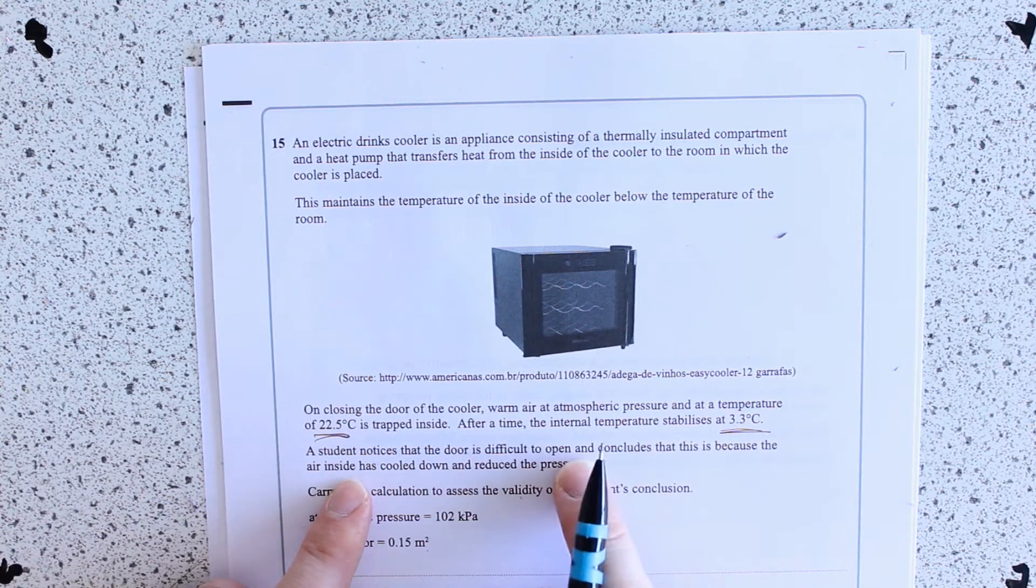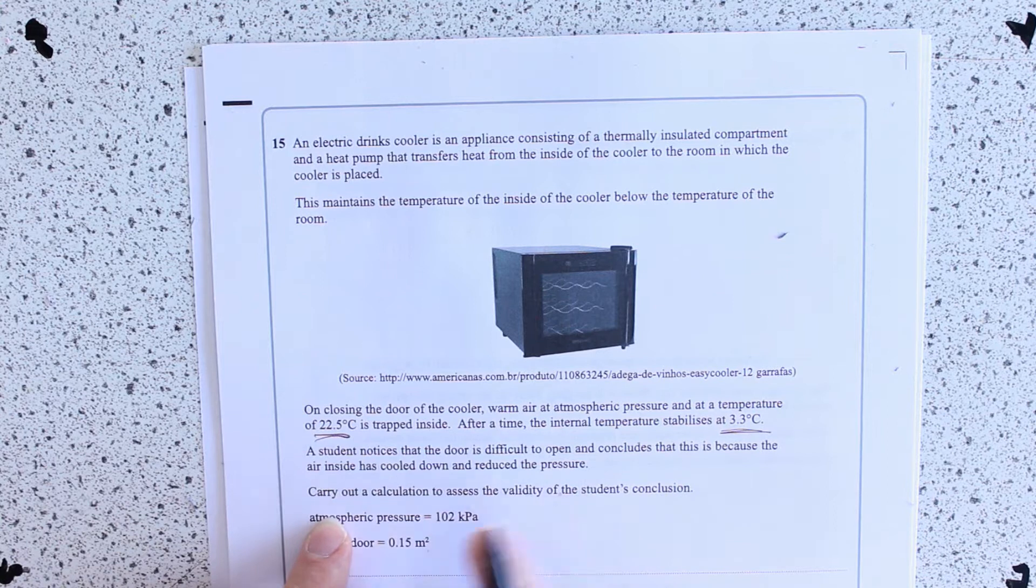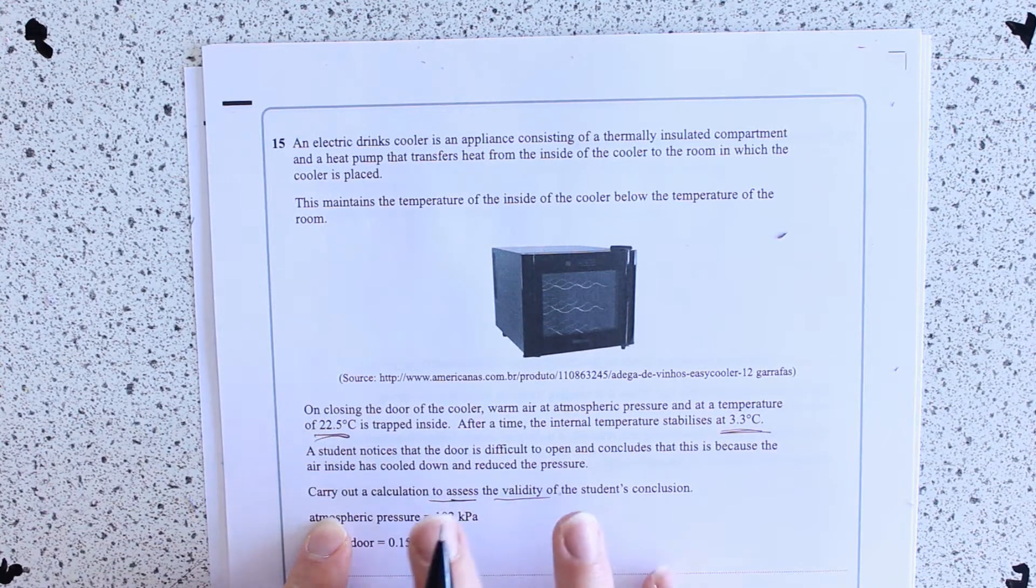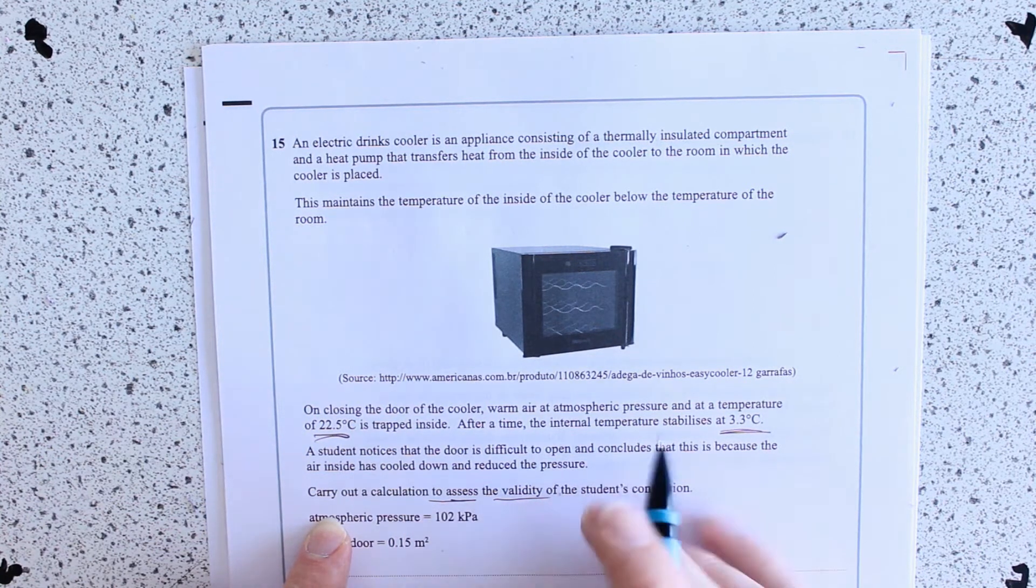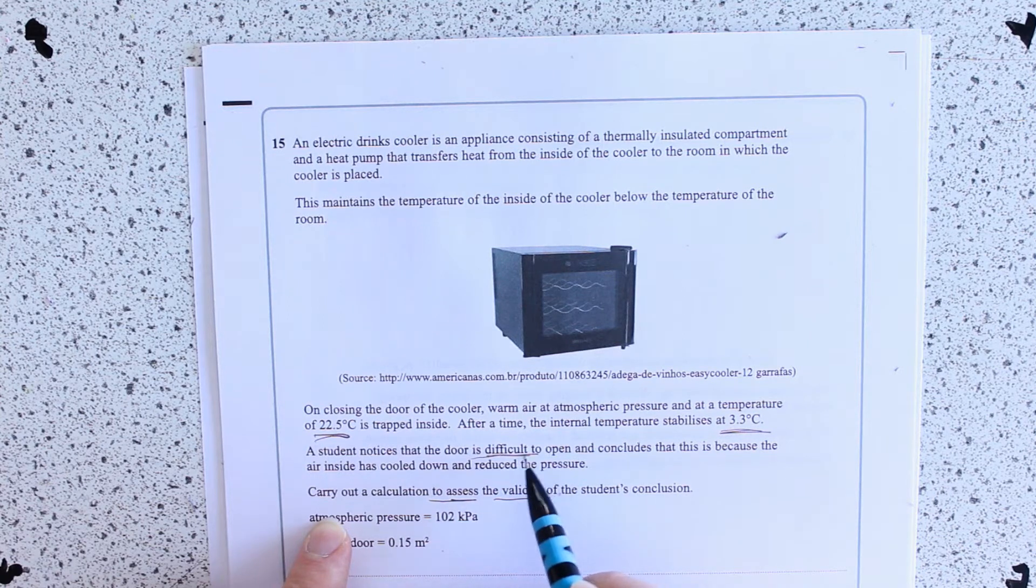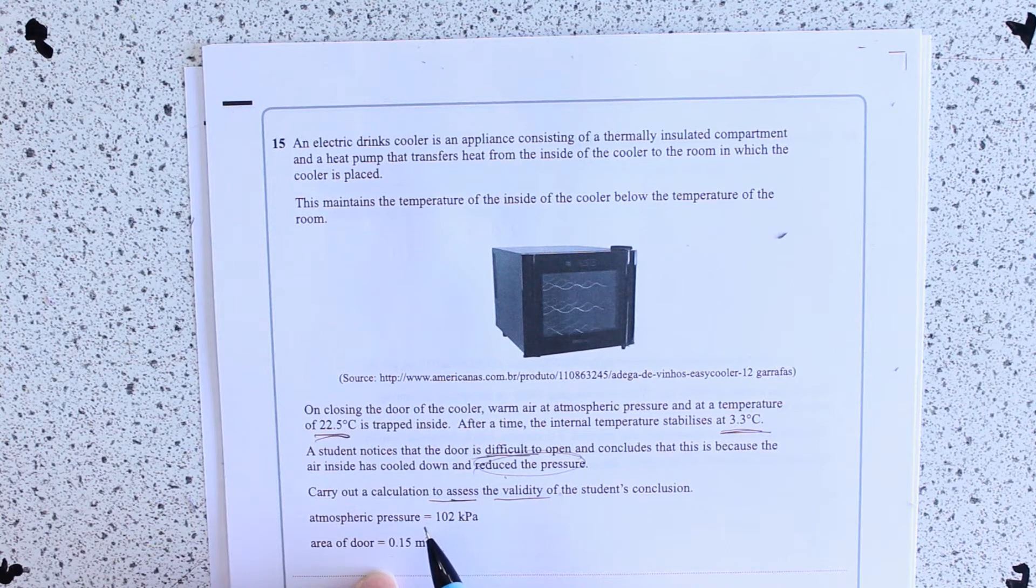A student notices the door is difficult to open and concludes this is because the air inside has cooled down and reduced the pressure. Carry out a calculation to assess the validity of the student's conclusion. This means you're going to have to make a comment at the end, so you're doing a calculation, basically to think, why is it difficult to open, and is this because of the reduced pressure?